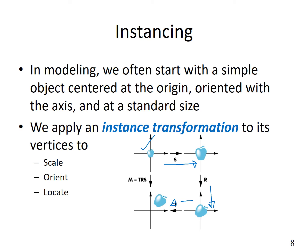We apply instance transformations to the object's vertices to scale it, orient it, and locate it. We can repeat these three steps, say 10 times or any number of times, to create that many instances of this object.